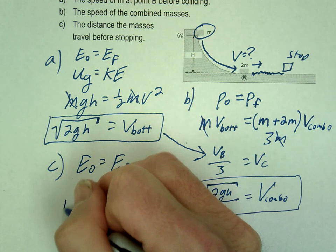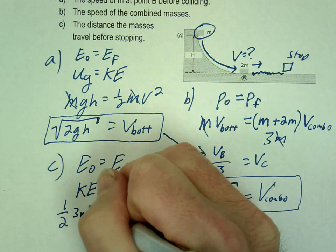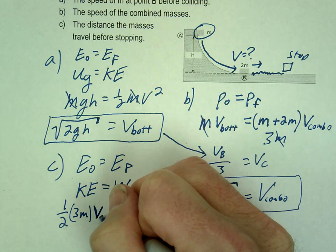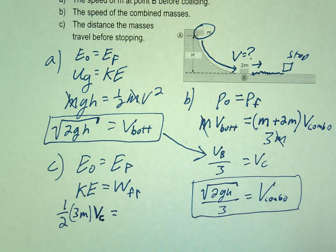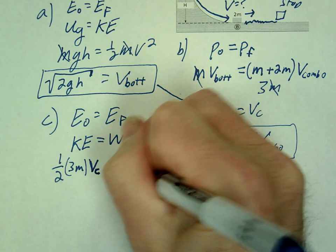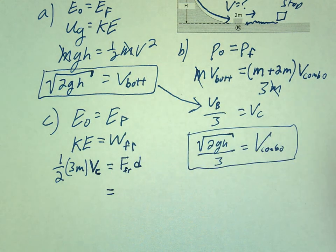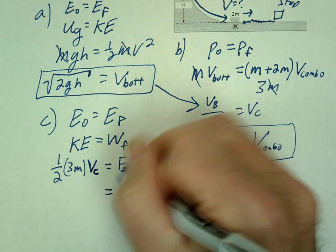Let's do it. So we're going to have one half. Now what m do I use for this? The combined mass. The combined mass, right. So 3m. So we're going to use 3m. And then v. Which v is this? The combo v. Equals work of friction. How do we find work? Force parallel to distance. This is force of friction. So now we get to break friction down, which we've done many times. So what's our equation for friction?